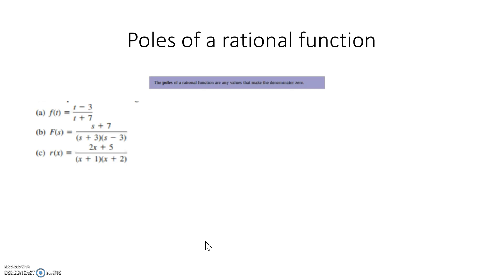So we talk about finding the poles of a rational function, and the poles are simply any values that make the denominator 0.